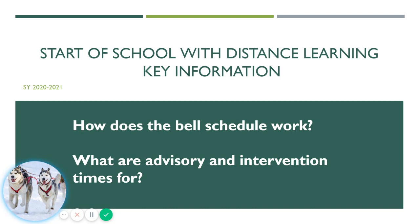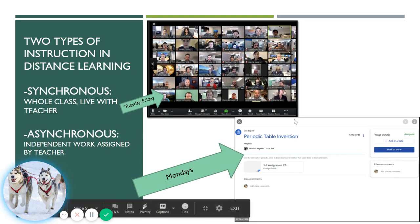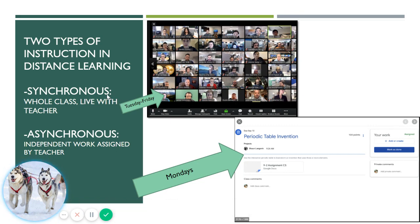During distance learning this fall, there are two types of instruction that you will have with your teacher. On your bell schedule you'll see the word synchronous. Synchronous instruction means you're going to be meeting with your teacher live as a class. Your teacher will be teaching you in either Google Meet, Zoom, or GoGuardian, and you will be using this platform to see your teacher and see other students in the class as you learn together.